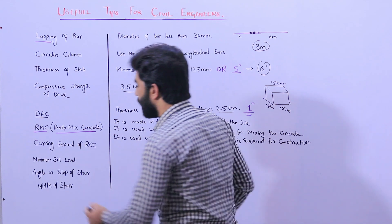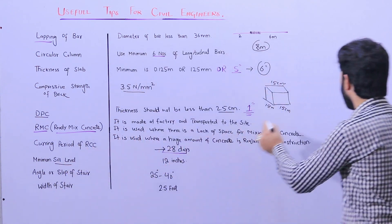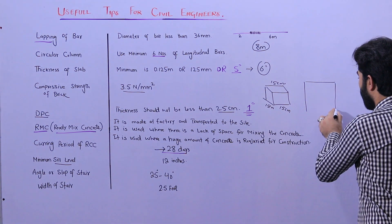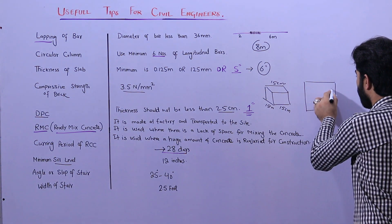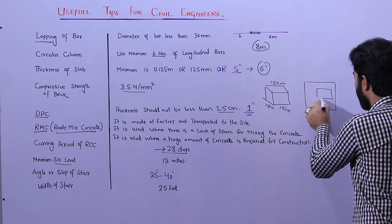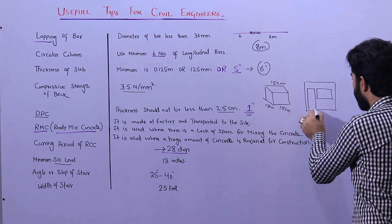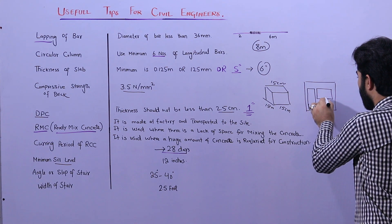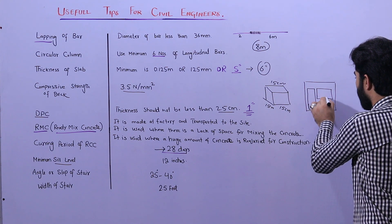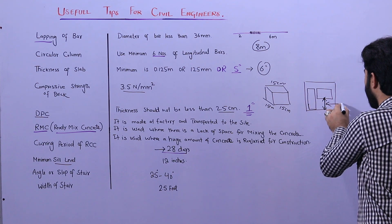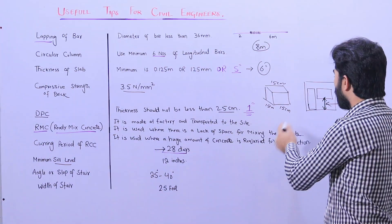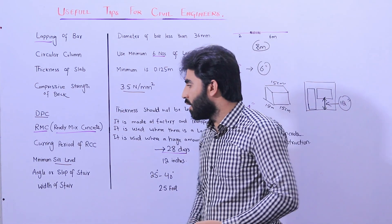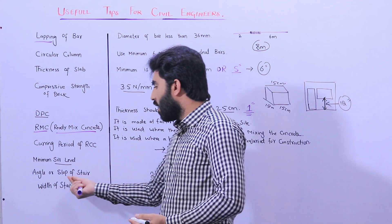The next tip is sill level. Looking at the front elevation, the sill level is the distance from the ground or plinth level up to the bottom of the window. The sill level should be a minimum of 12 inches, but normally 2.5 to 3 feet is used.